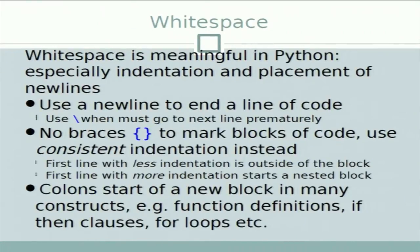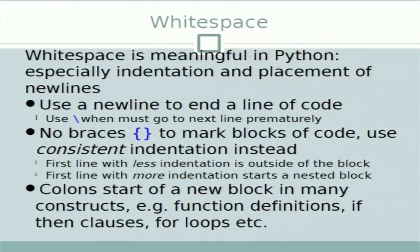White space is meaningful in Python, especially indentation and placement of new lines. In Python, scopes are defined by indentation — there are no opening or closing braces that mark the start or end of a scope. Use a new line to end a line of code, and use backslash to continue. No braces to mark blocks of code; use consistent indentation instead. The first line with less indentation is out of the block, and more indentation creates a nested block. Colons also define blocks in many constructs — for example function definitions, if-then clauses, and for loops.